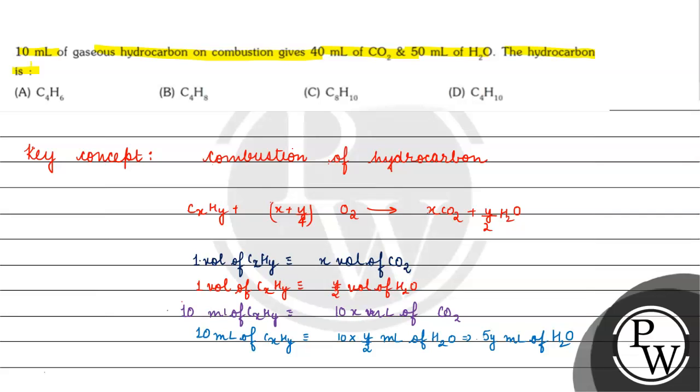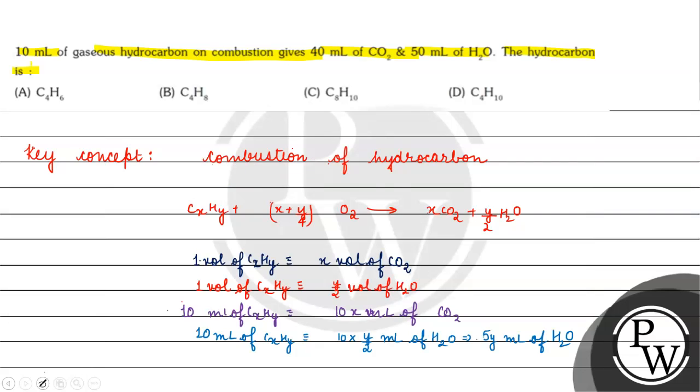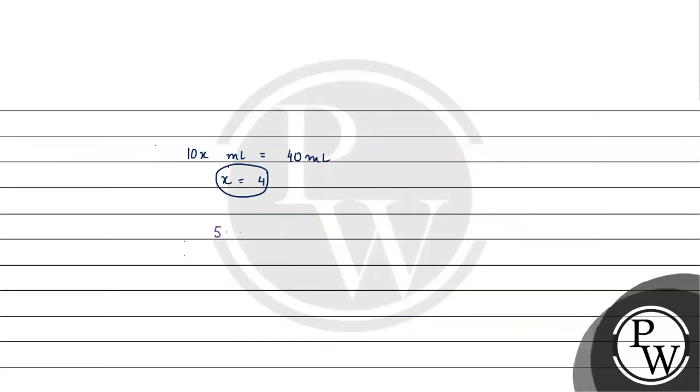What do we need to do? We need to take value of x and y. So, what do we need to do in this question? The volume given is 50 ml, 50 ml of water. Then y is basically equals to 10. y is equals to 10. And the compound will be C4H10.